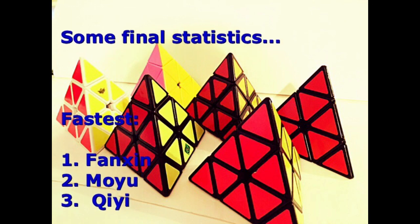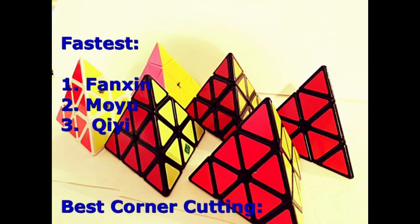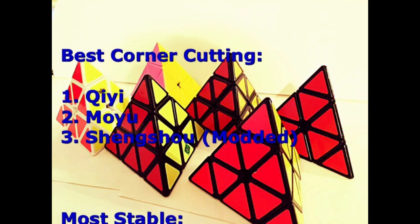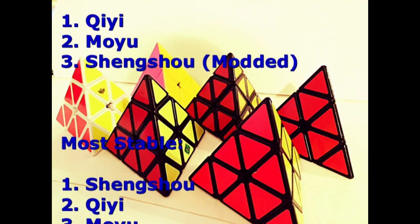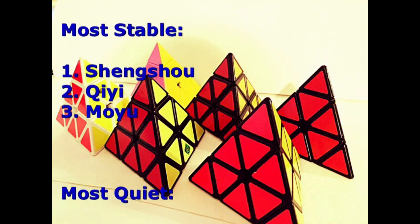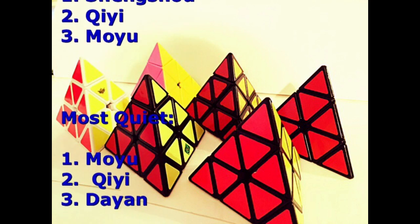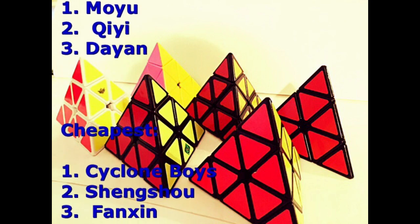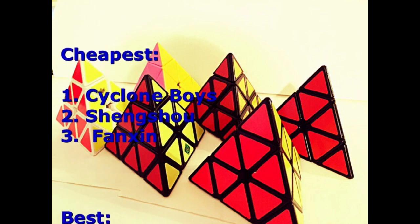So, the fastest one is the Fon Shin followed by the Moyu and then the Qi Yi. The best corner cutting goes to the Qi Yi, second place the Moyu, and then third place a modded Changsha. The most stable is the Changsha, then the Qi Yi, then the Moyu. The most quiet is the Moyu, then the Qi Yi, then the Dayan. The cheapest is the Cyclone Boys, the Changsha, and the Fon Shin.